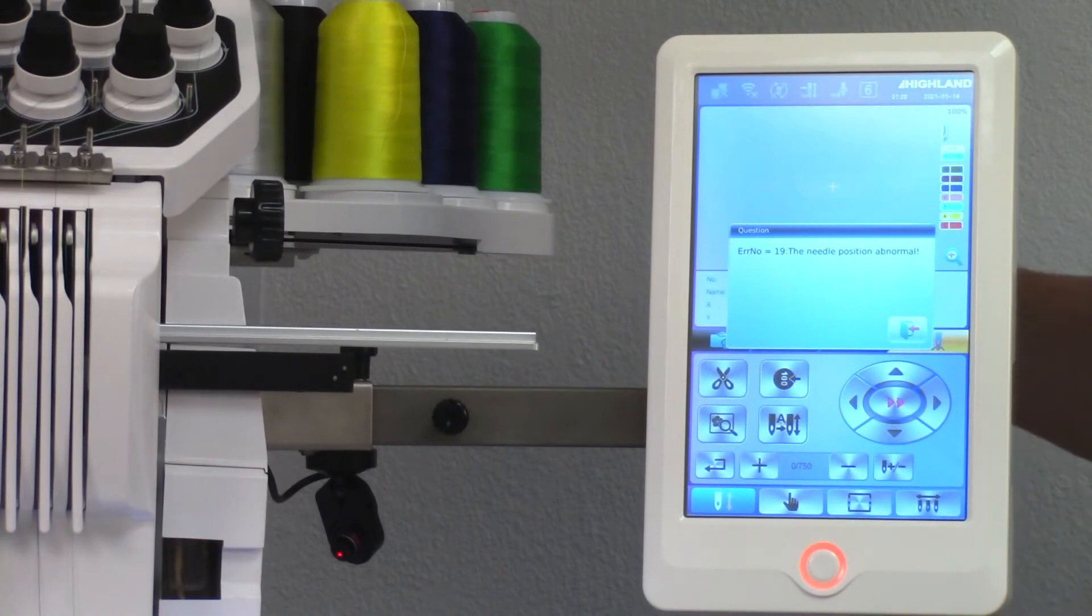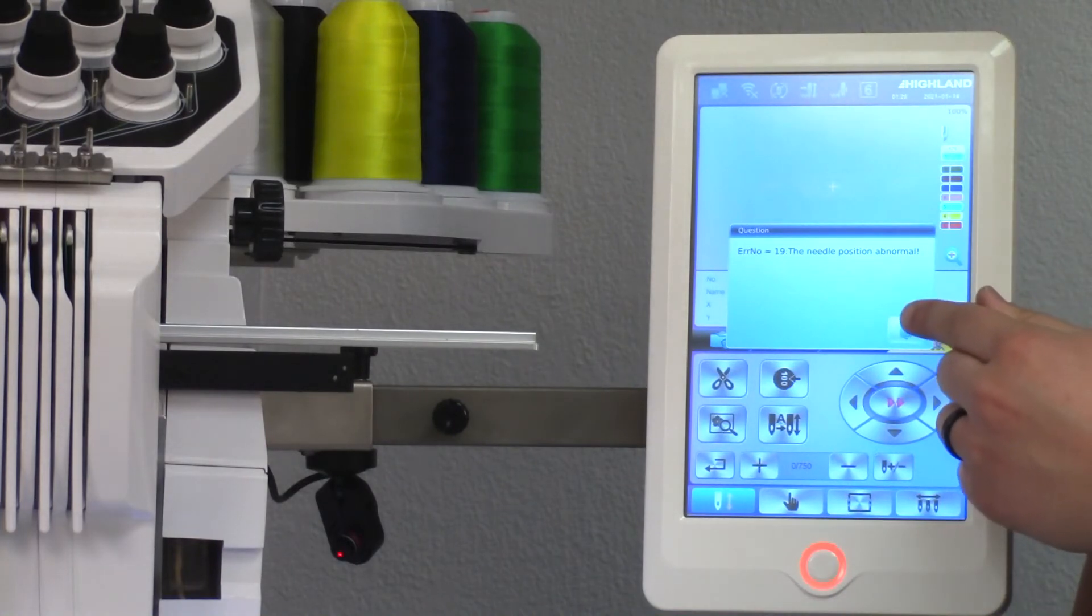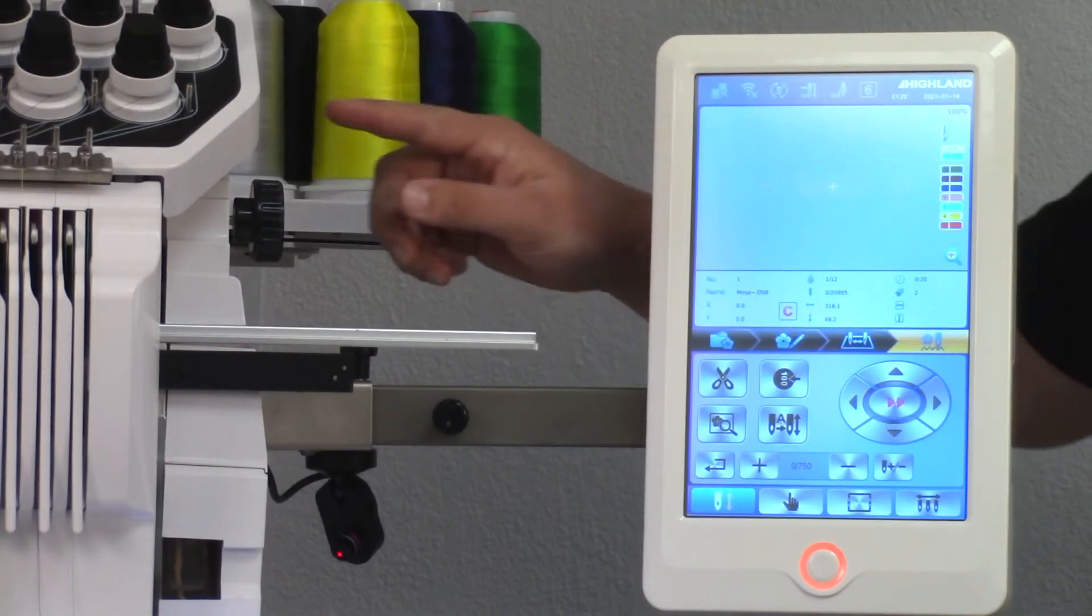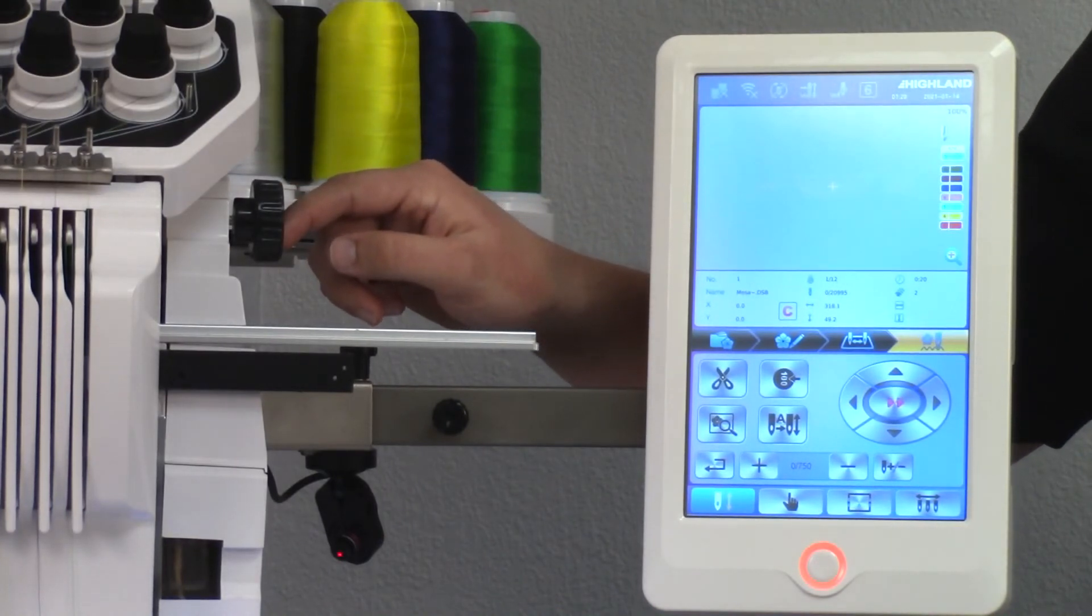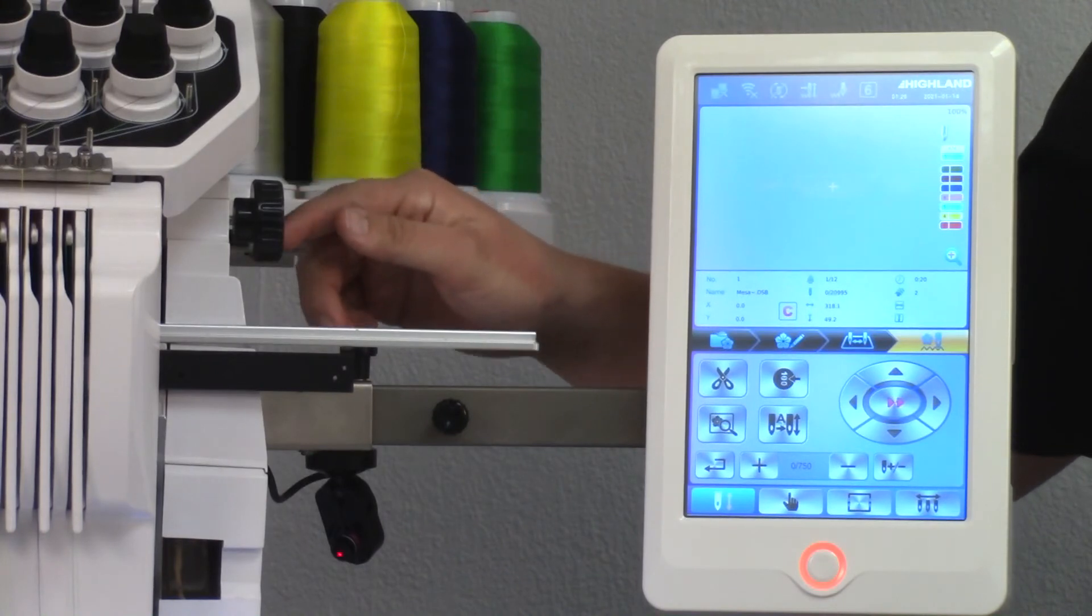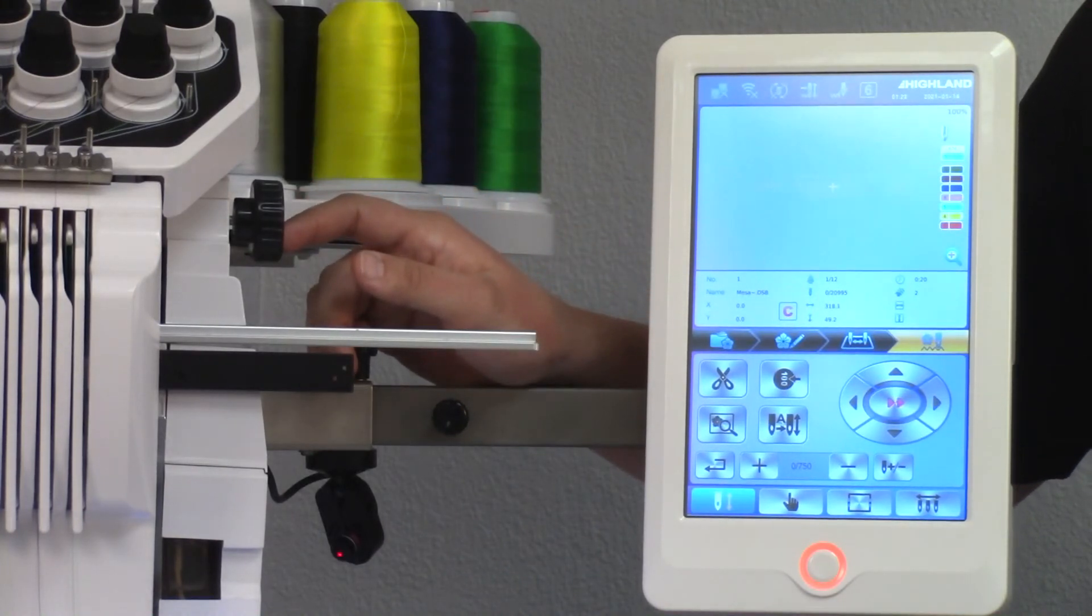So to resolve this, I'm going to tap the arrow going out the door. And then I'm going to locate either a black or a red knob, which is located on the right side of the sewing head. Depending on the model of the machine you have, that will determine the color of this knob.